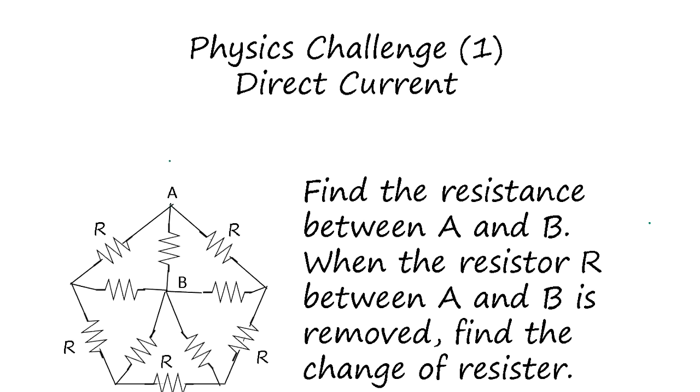Physics challenge one: direct current. We have a configuration, a pentagon shape with resistors. All the resistors are R here - R, R, R, R, R. And we find the resistance between A and B. To do that we apply the voltage and measure the current. We can use Kirchhoff's theory.